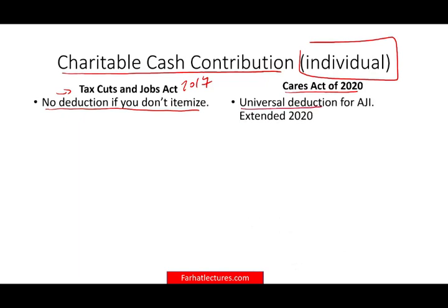Under the CARES Act, you're going to have a universal deduction for AGI. You can deduct this upfront on your 1040 for AGI — $300 if you're single and $600 married filing jointly. So anyone can take this deduction as long as they contributed cash to a public charity. That wasn't the case before, because the only way you could take advantage of any charitable contribution was if you itemize. Many people don't itemize, especially after the Tax Cuts and Jobs Act increased the standard deduction.